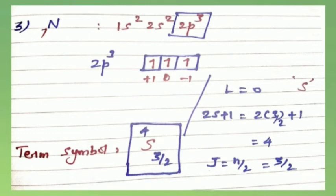With 3 electrons each having spin 1/2, the total spin S = 3/2. So 2S+1 = 2×(3/2)+1 = 4. The sub-shell is exactly half-filled, so J = N/2 = 3/2. Therefore the term symbol for nitrogen is ⁴S₃/₂.